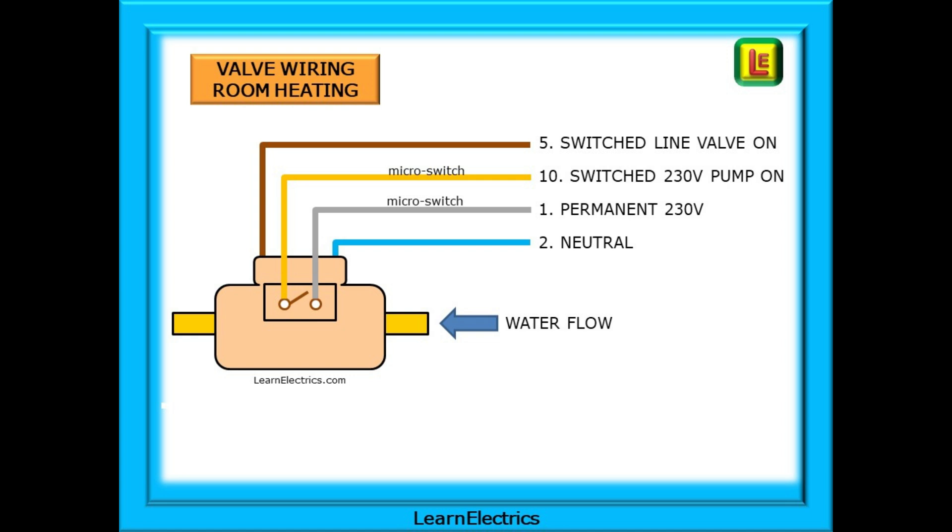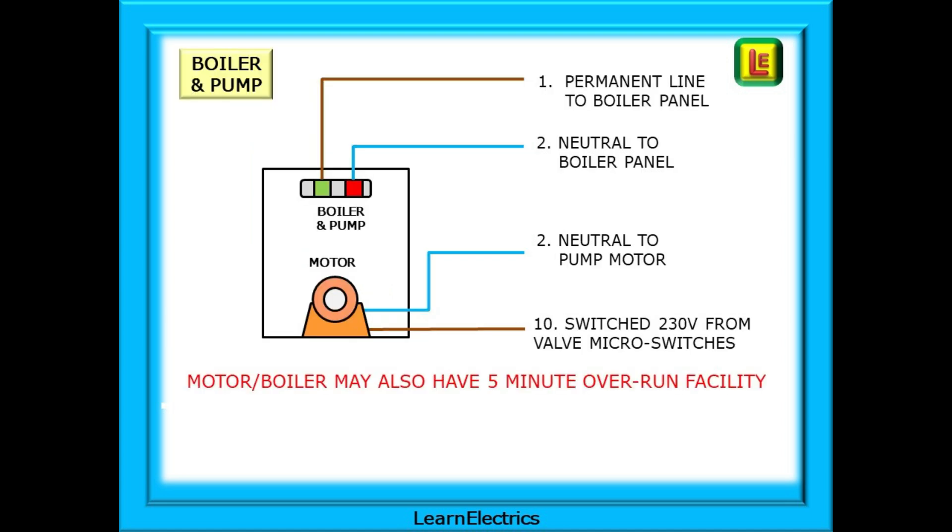As the valve rotates it will close the microswitch inside the valve body. The microswitch has a permanent 230 volt connection on the grey wire and when the switch closes this voltage will pass through the switch and go to the pump motor. The 230 volt output from the valve microswitch will turn the pump motor on as there is already a neutral at the motor.